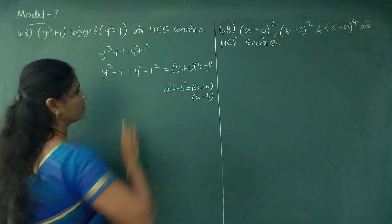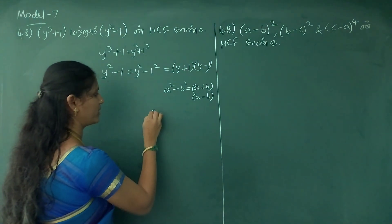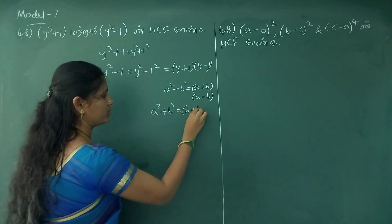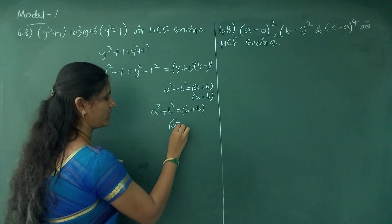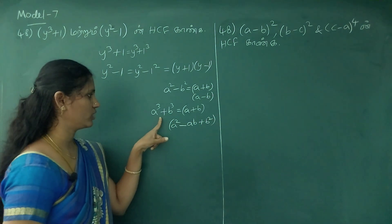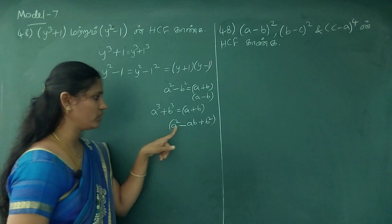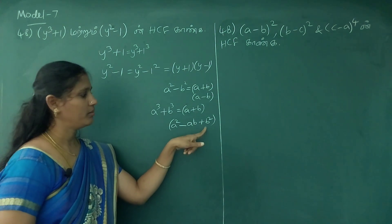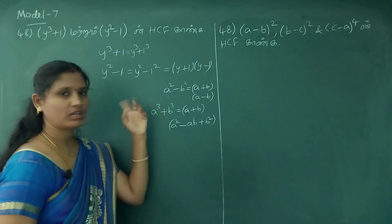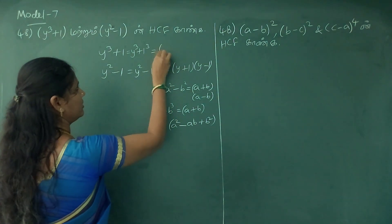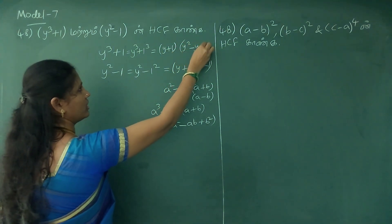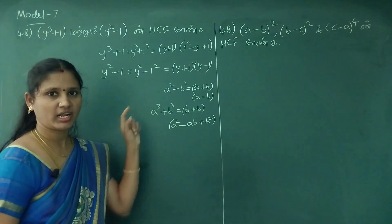What is the next formula? y cubed plus 1. This formula is: a cubed plus b cubed equals a plus b into a squared minus ab plus b squared. Here a is y and b is 1. So we get a plus b, and a squared minus ab plus b squared.